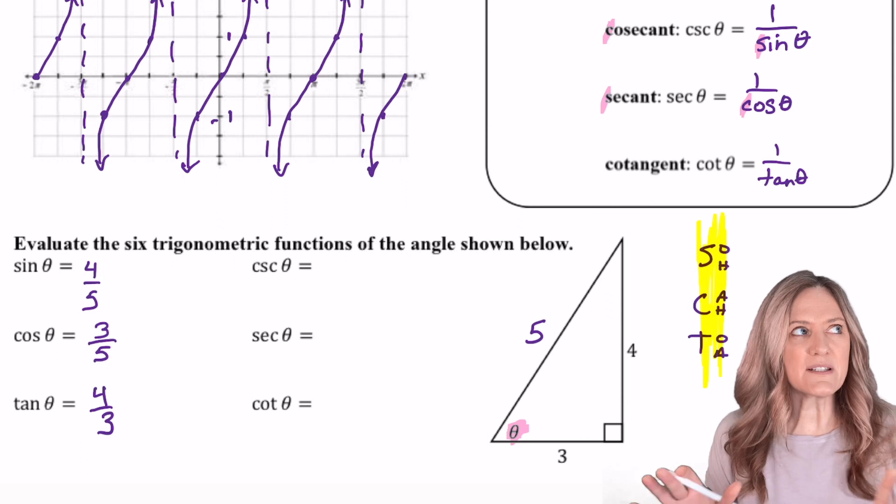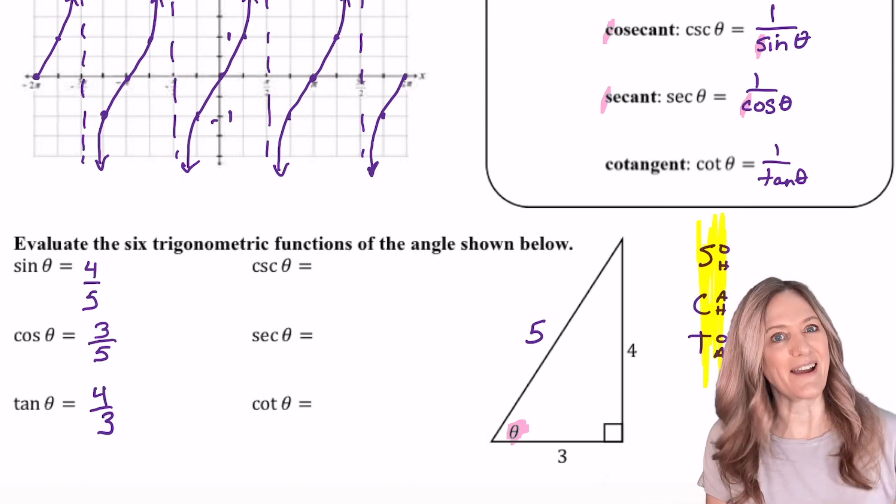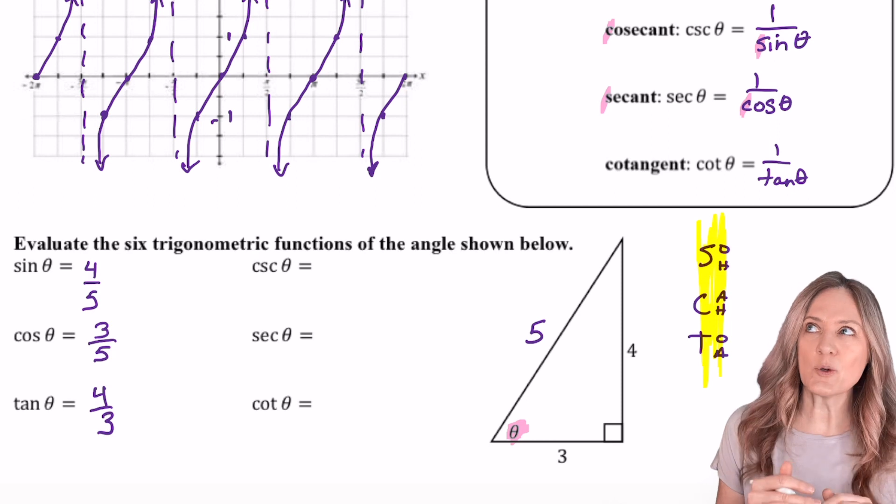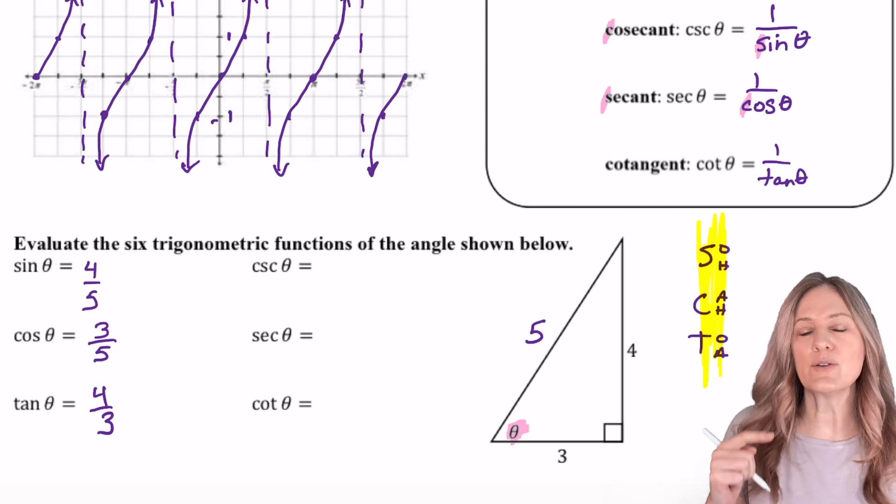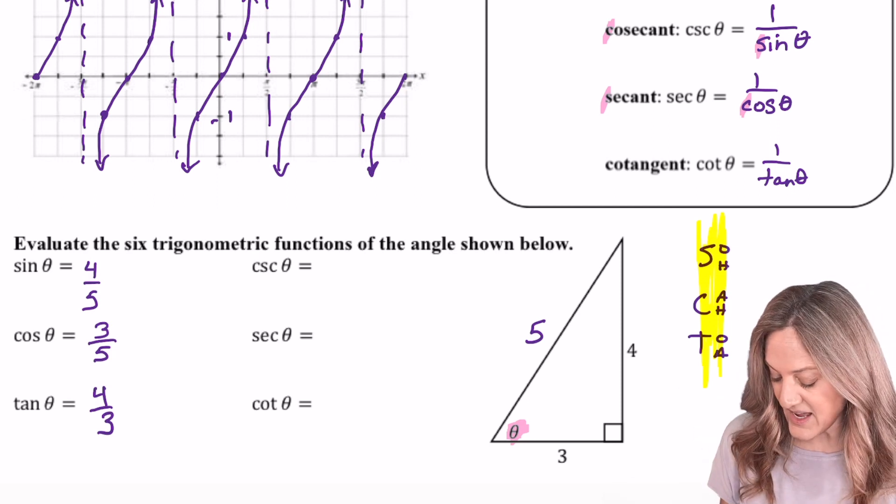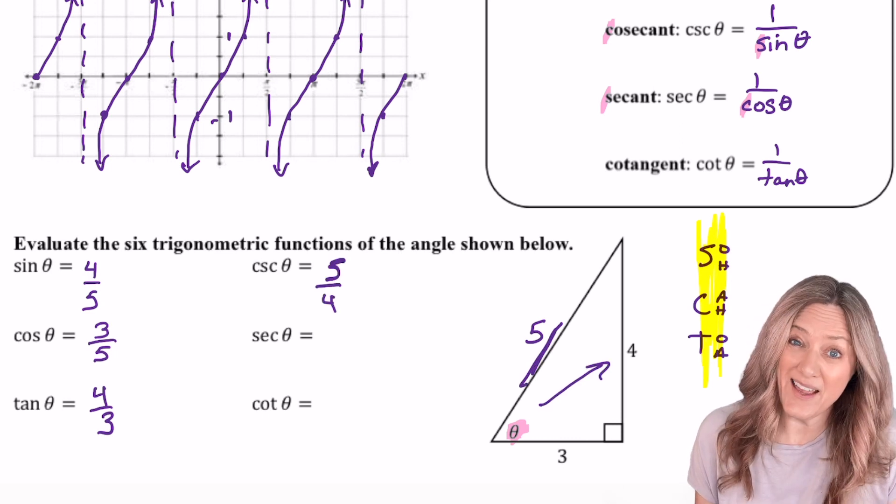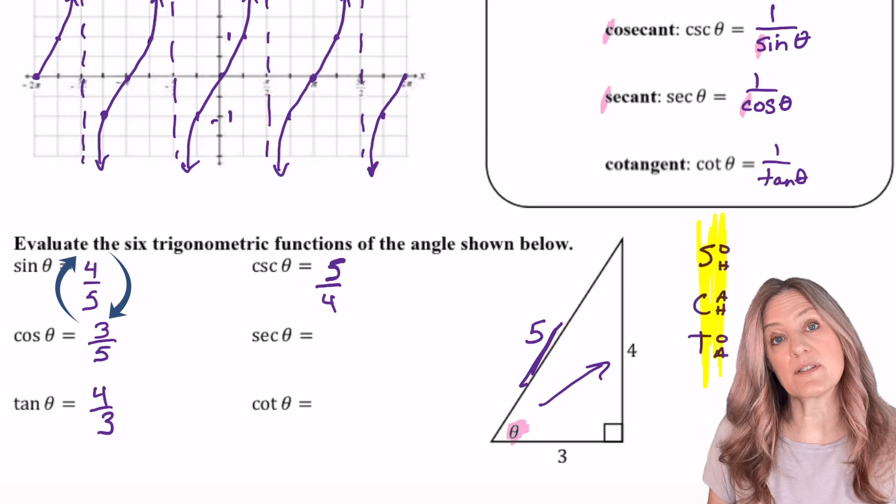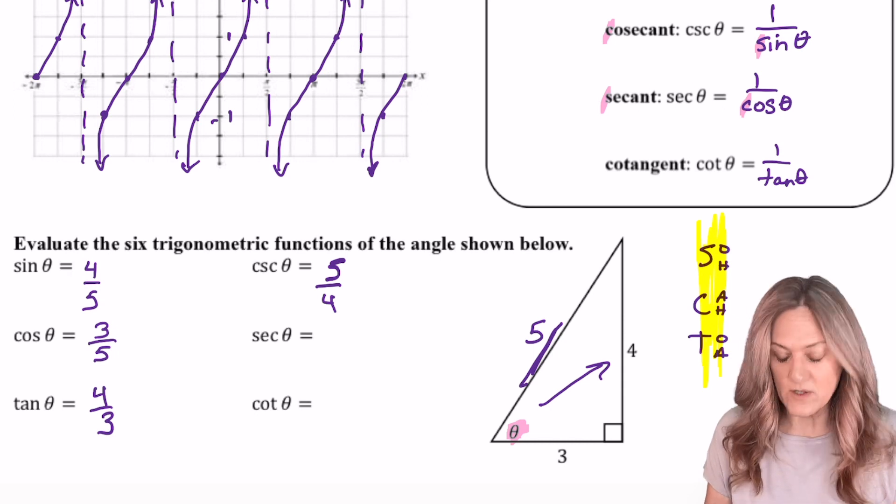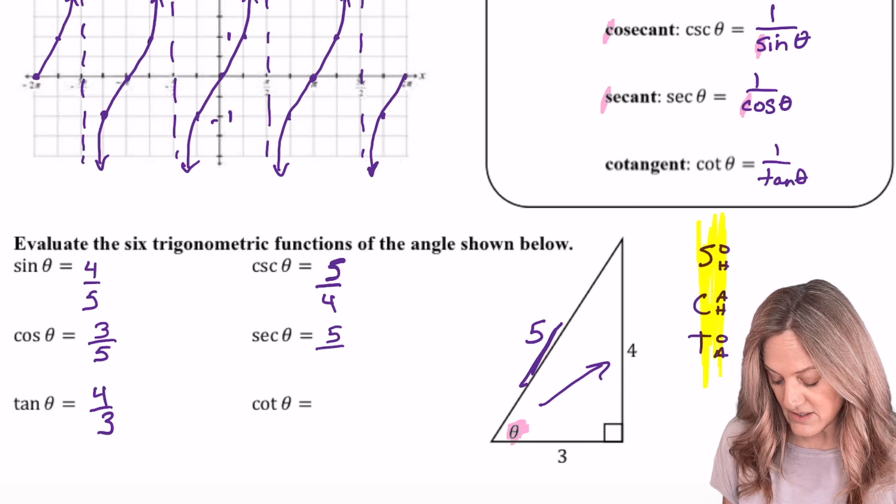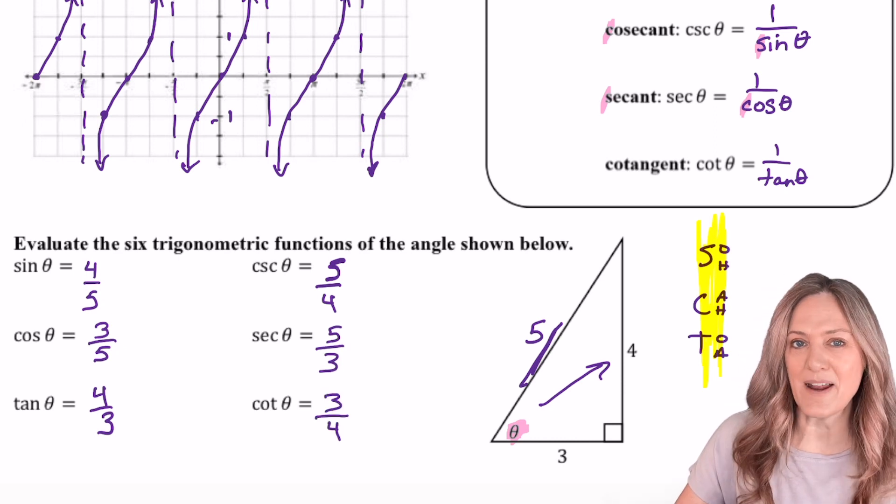As I look at cosecant, let's pretend like I haven't already written down sine, cosine, tangent. Cosecant is the reciprocal of sine. So really, I'm thinking hypotenuse over opposite. So in that case, 5 divided by 4. The other way is just think of sine and take the reciprocal of 4/5, which is 5/4. So likewise with secant, we'd have hypotenuse over adjacent, 5/3, and cotangent, 3 divided by 4.